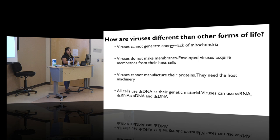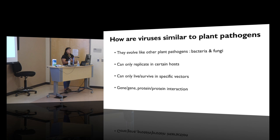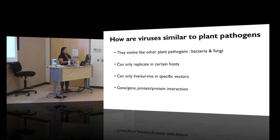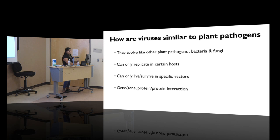How are viruses similar to other plant pathogens? They evolve like bacteria and fungi. They can replicate only in certain hosts — for example, Fusarium that infects lettuce only infects lettuce. The same host-pathogen specificity applies to viruses. They can only live or survive in specific vectors, which is actually a good thing — if every insect transmitted every virus, we would have no plants to grow. This specificity is contributed by gene-to-gene or protein-to-protein interactions.